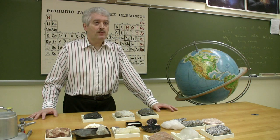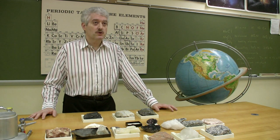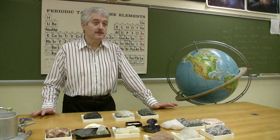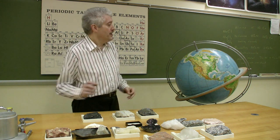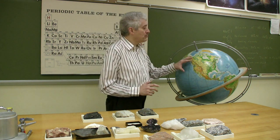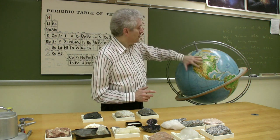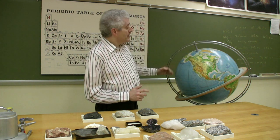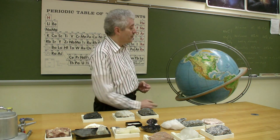Basalt is an example of an igneous rock, and it's one of the most important and abundant rocks on the Earth. If we look at our planet, its crust, or outer layer, is divided into two types of material.